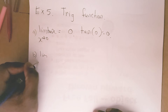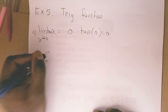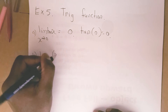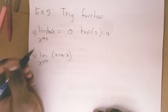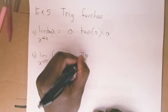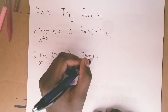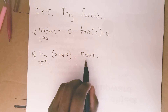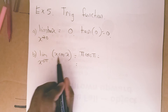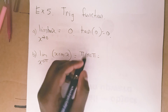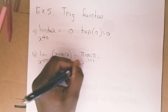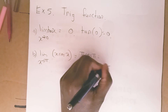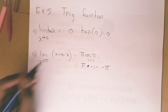For part b, the limit as x approaches pi for x·cos(x). We plug in pi: pi times cos(pi). Cos of pi is negative 1, so we get pi multiplied by negative 1, which is equal to negative pi. The limit as x approaches pi is negative pi.